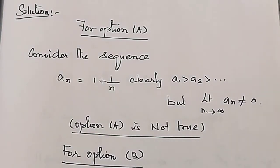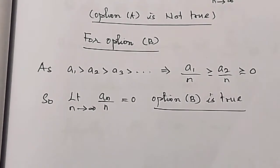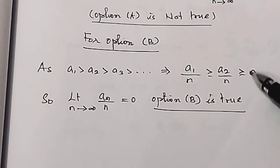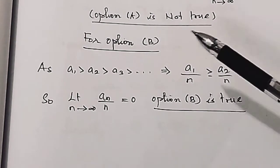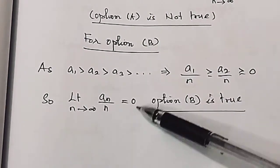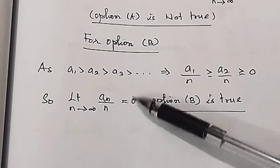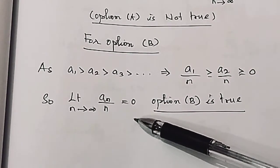We move on to option B. We will evaluate a1 and a2. The limit as n tends to infinity of a_n is 0, and option B is true.